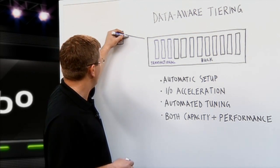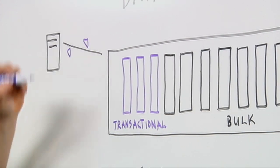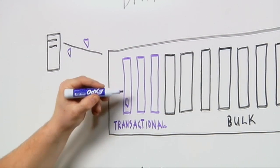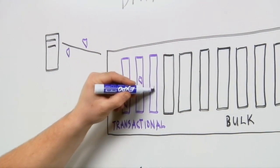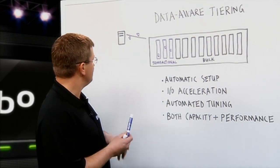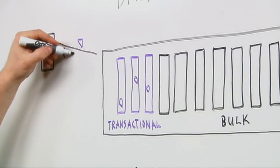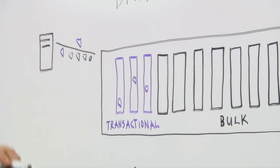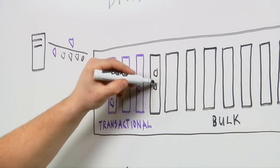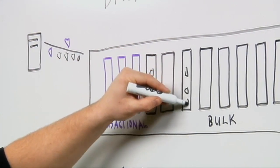As the data is coming into the Drobo, if it's random in nature, that data will automatically end up on the SSDs. If it's bulk in nature and sequential, so larger IOs, sequential IOs, it will end up on the hard disk drives.